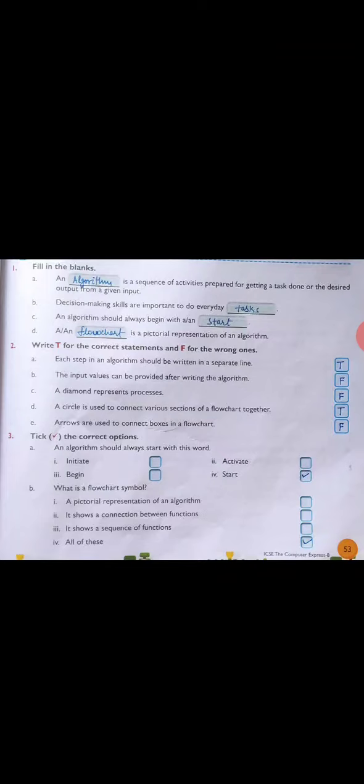Second question: Write true or false. T for a correct statement, F for a wrong statement. First: Each step in an algorithm should be written in a separate line - true. The input values can be provided after writing the algorithm - false.